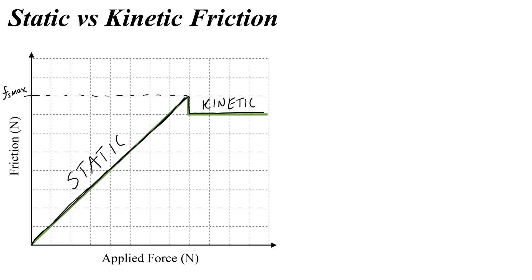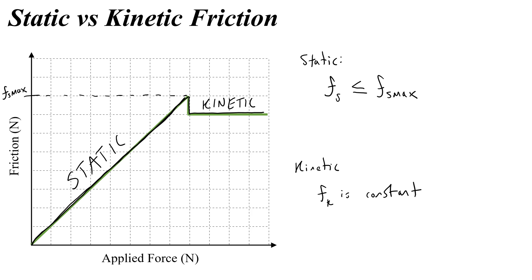Remember that for static friction, the force of static friction FS is going to be less than or equal to that maximum value. And for kinetic friction, Fk, it is constant — just some value. We're going to come back to this and try to come up with an equation to put a number to maximum static friction or kinetic friction.